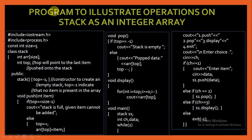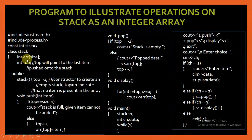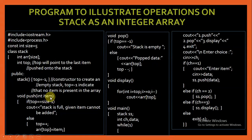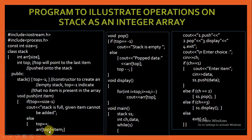Now let us write a program to illustrate operations on stack as an integer array. We have included the header files iostream.h and process.h, and this is the size of the stack. I have created a class stack in which the private members are an array of size 5 and a variable top to keep track of the topmost element. There are 4 public member functions. The constructor initializes top to minus 1. The push function checks if top is size minus 1 — if so, the stack is full and the element cannot be added. Otherwise, we increment top by 1 and add the item at the top position of the array.